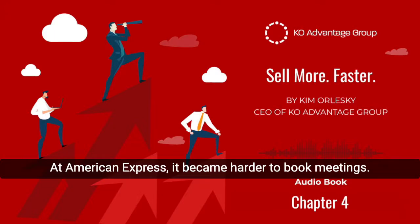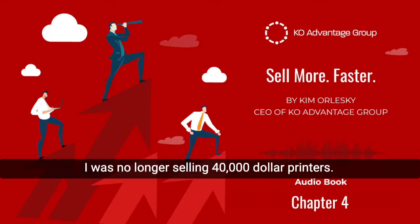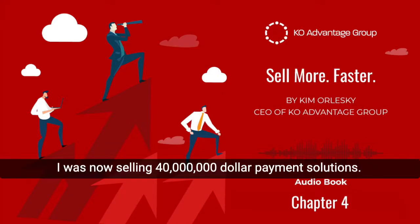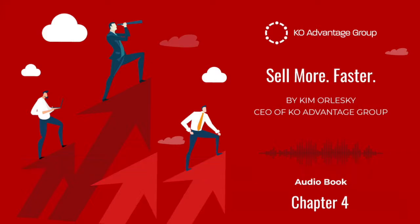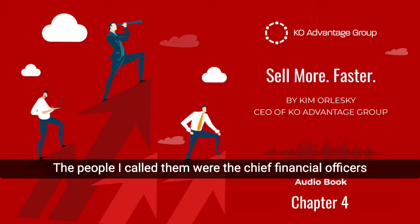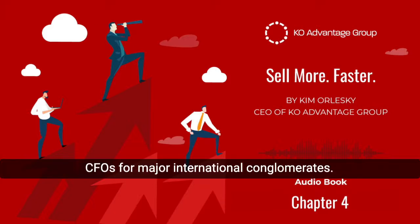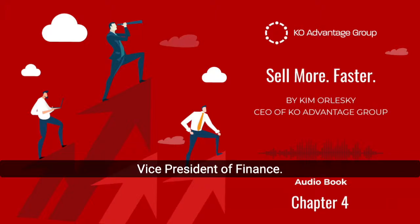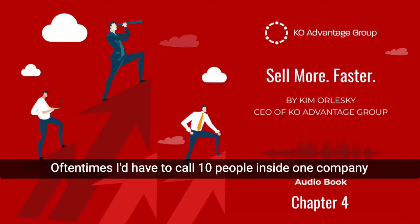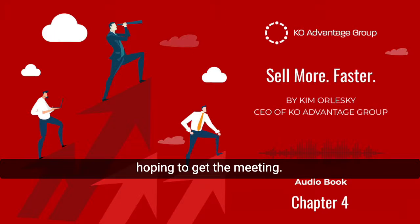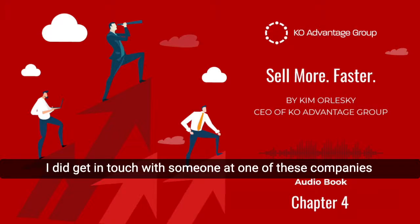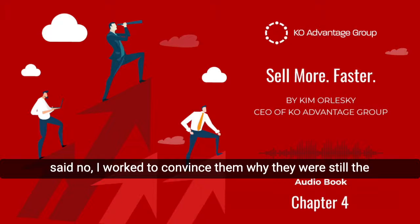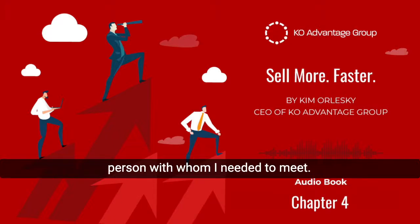Focus on the goal. At American Express, it became harder to book meetings. I was no longer selling $40,000 printers — I was now selling $40 million payment solutions. I was asking people to change the way they were processing their payments, which is a lot harder to do. The people I called on were the chief financial officers, CFOs, for major international conglomerates. Or if I couldn't get through to them, I called their vice president of finance. Oftentimes, I'd have to call 10 people inside one company, hoping to get the meeting. At times, this required some fancy wordplay, because when I did get in touch with someone and they tried to refer me to someone else who'd already said no, I worked to convince them why they were still the person with whom I needed to meet.